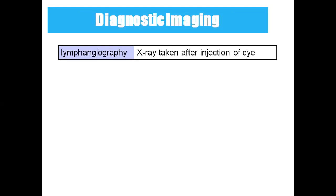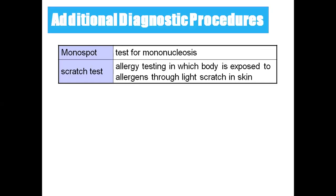Lymphangiography — 'lymphangio' means lymphatic vessel, 'graphy' means taking an X-ray — is taking an X-ray of the lymphatic vessel by injecting a dye; without injecting the dye we cannot see the lymphatic vessel. Monospot is the test for mononucleosis.